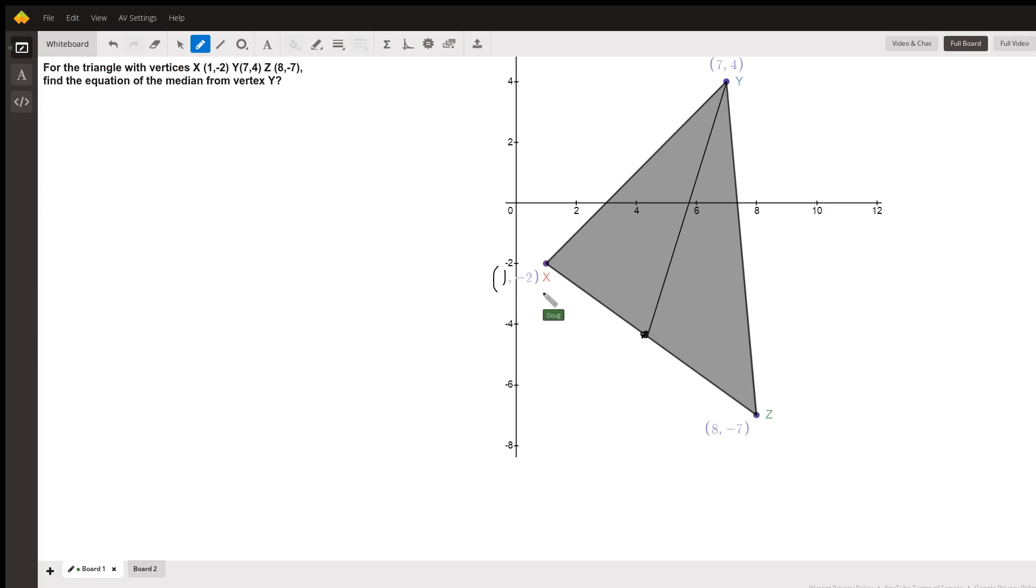So how do you find the midpoint of a segment? Well, it's the average of the x coordinates, comma, average of the y coordinates. So the midpoint of segment x, z is 1 plus 8 over 2, which is 9 halves, or 4.5. And negative 2 plus a negative 7 is negative 9 over 2. There's the coordinates of the midpoint.